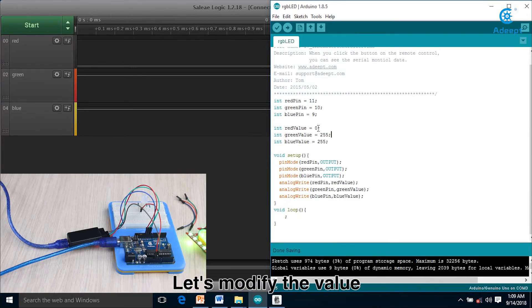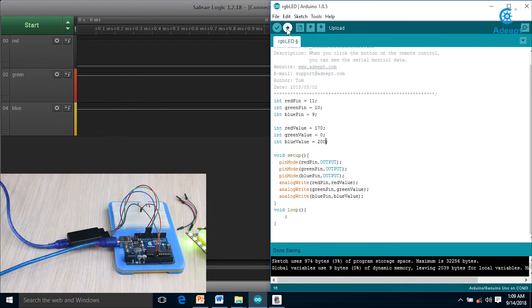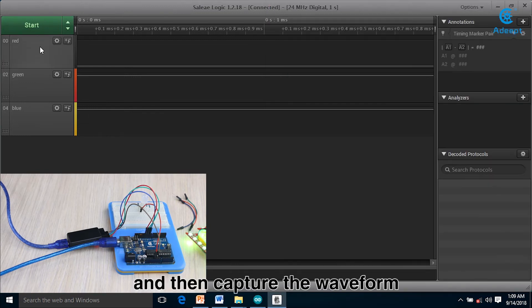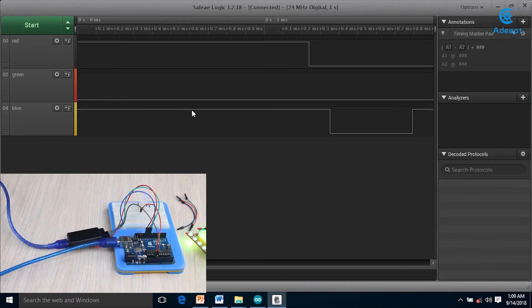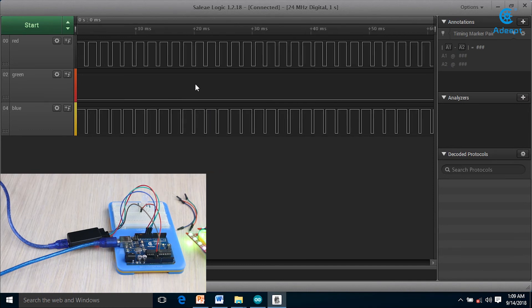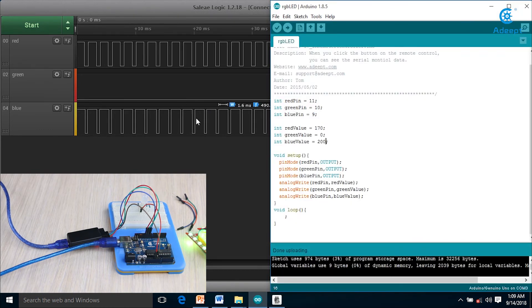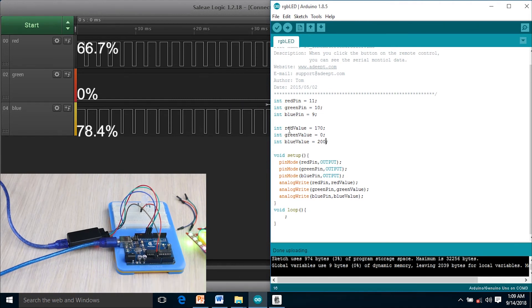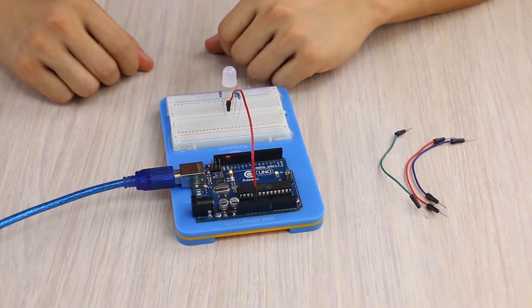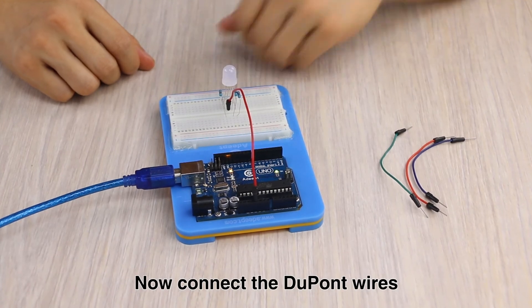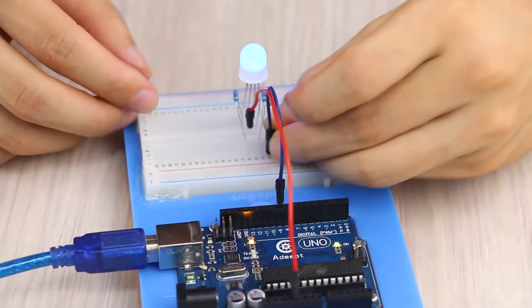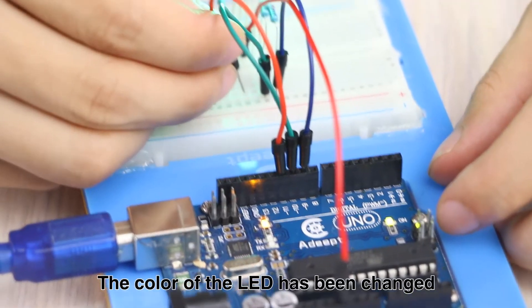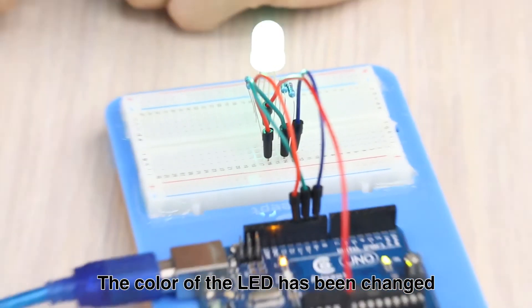Let's modify the value and then capture the waveform. We can see that the duty cycle has been changed. Now connect the wires. The color of the LED has been changed.